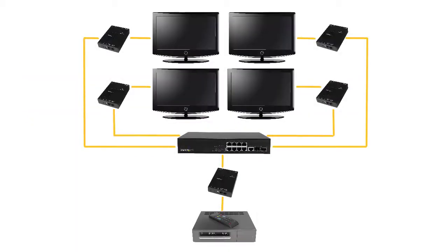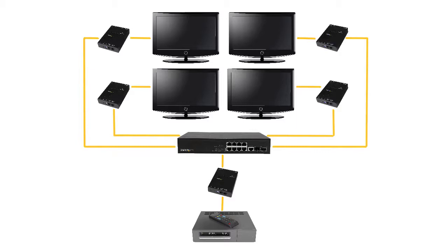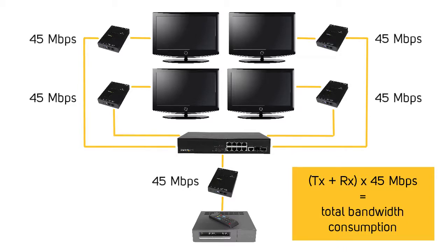Video signals sent through the video extender consume bandwidth on your network. To calculate the average bandwidth for a 1080p 60Hz video, use the following equation: add the number of transmitters to the number of receivers, then multiply the result by 45 megabits per second.